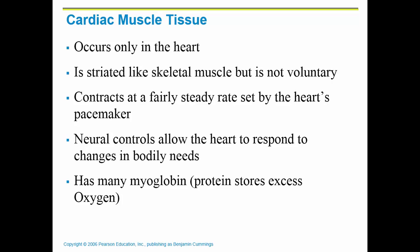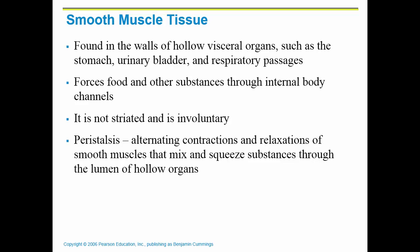Smooth muscle tissue is found in the walls of hollow organs, so it forces things through, usually in one direction. It is the only muscle type that is not striated, and it is also involuntary like cardiac muscle. Peristalsis is the way that it contracts — it's a wave-like contraction that squeezes substances in one direction through a hollow organ.